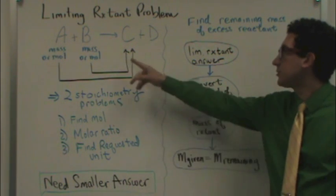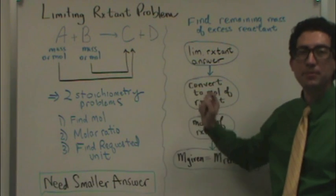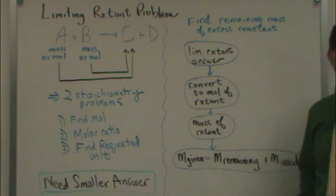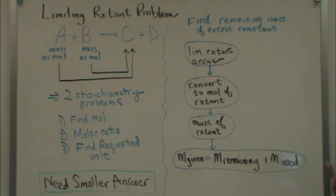And then you'll do that for both A and B, two separate problems, and you're going to go for your smaller answer. The smaller answer means that whatever reactant it came from is going to limit the amount of C produced because you basically have less of that reactant based on the molar ratio.